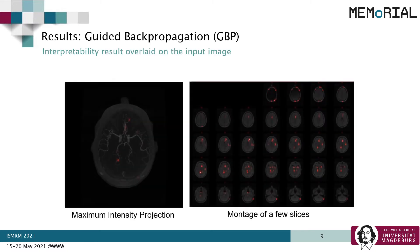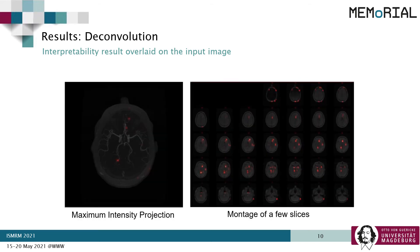Now let's have a look at the interpretability results. First, using the guided backpropagation algorithm. The red dots signify the focus area of the network — the more intense the red, the more focus the network gave on that region. It can be observed that the primary focus of the network was many times outside the vessels, even on the skull.